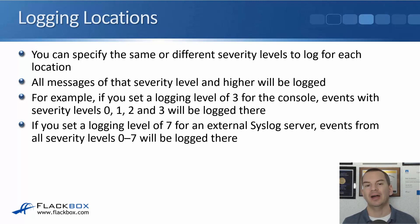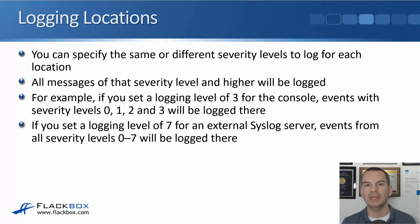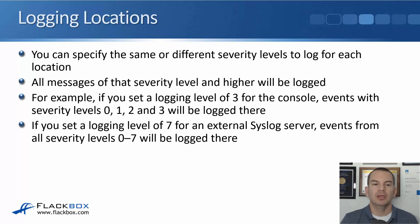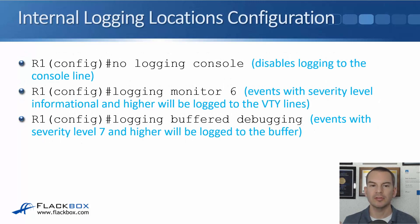When you set a severity level for a logging location, all messages at that level and higher severity will be logged there. For example, if you set a logging level of three for the console, then events with severity levels zero, one, two, and three will be logged there — everything at that level and everything more serious. Remember, the lower the number the more serious it is. If you set a logging level of seven to an external Syslog server, events from all severity levels zero to seven would be logged there.